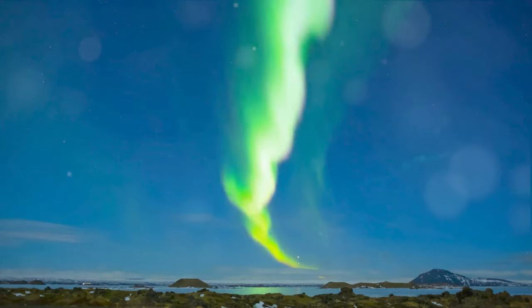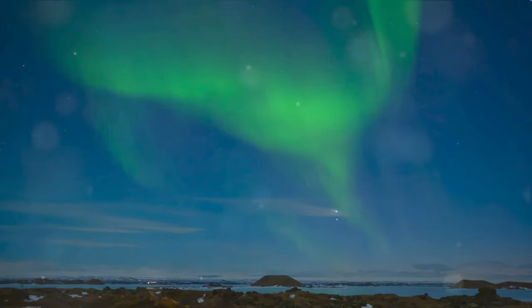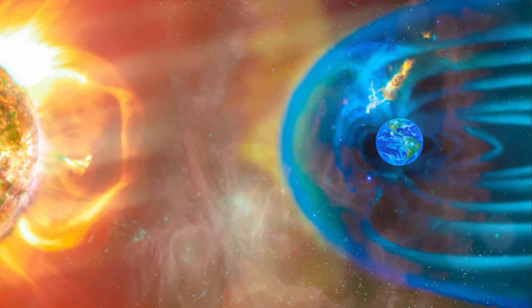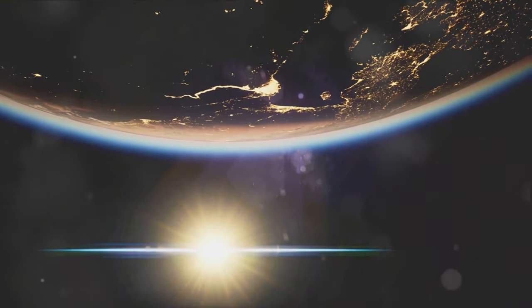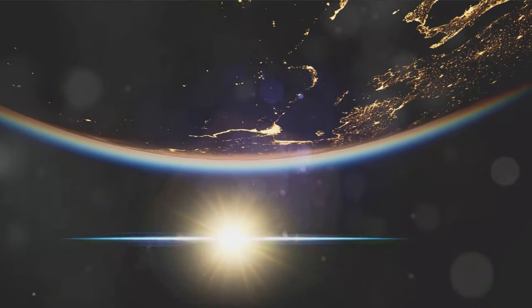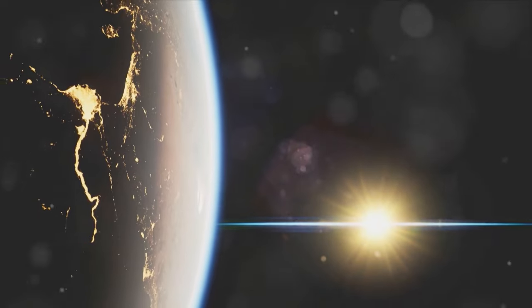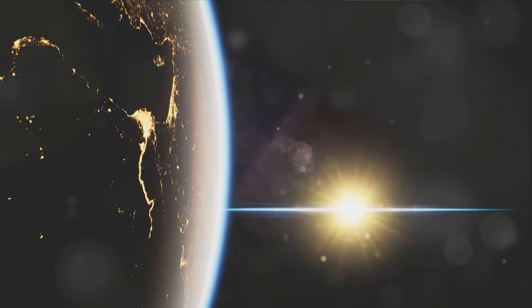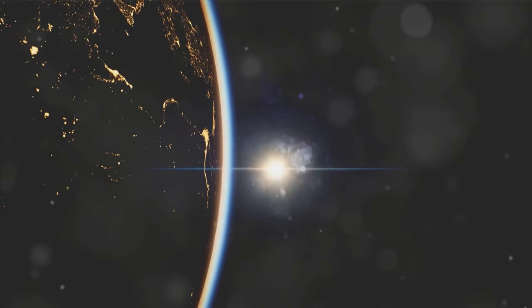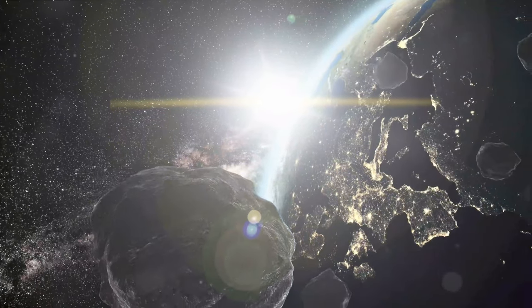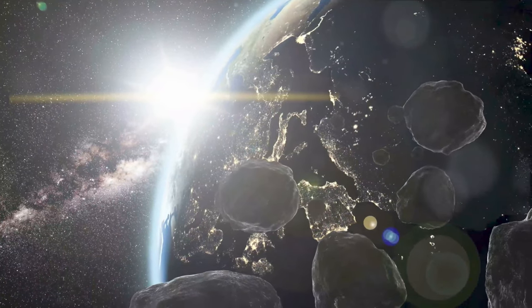A recent study has unveiled a surprising truth: our Earth's upper atmosphere, the ionosphere to be precise, is a major influencer in the creation of geomagnetic storms. These storms can wreak havoc on our modern technology, disrupting power grids, radio signals, and GPS. But where does the raw material for these storms come from? The answer, until recently, was thought to be the solar wind, the stream of charged particles emanating from the sun. However, this new study presents a different narrative.